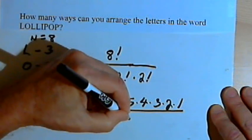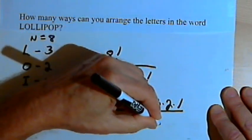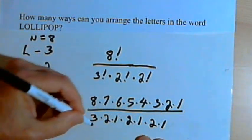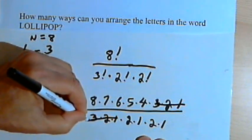Times 2 factorial is 2 times 1. Times 2 factorial again is again 2 times 1.